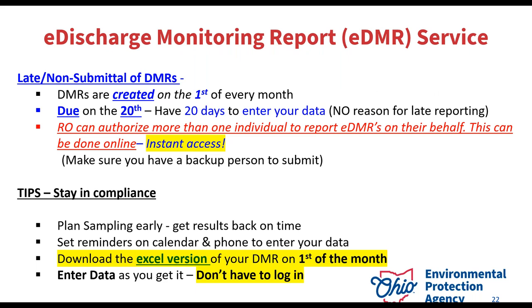Just some quick tips and tricks for EDMR. DMRs are always created on the first of every month. If you go in and it's not there, check with your permit because sometimes it pulls information based on what your permit says. If it's still not there, reach out to me and we'll get it sorted out. The DMRs are always due on the 20th — no exceptions. You have 20 days to report, so there should be no reason for late reporting.